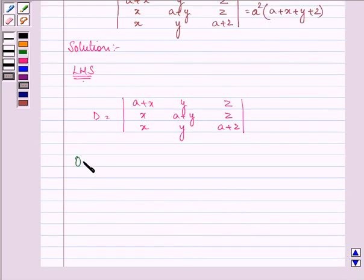Now let us operate. In column 1 let us add all the three columns. So on doing so we have D equal to